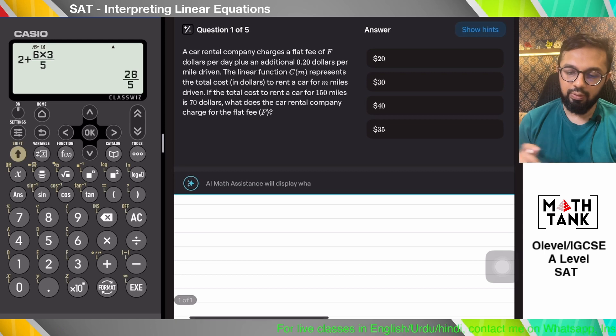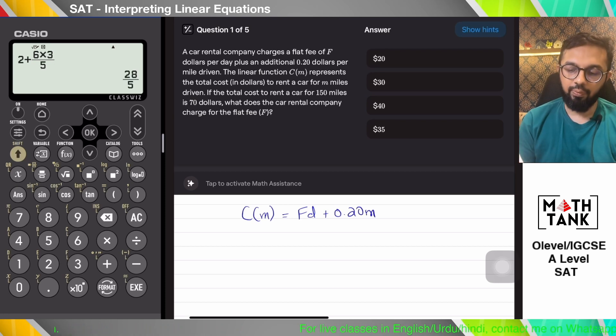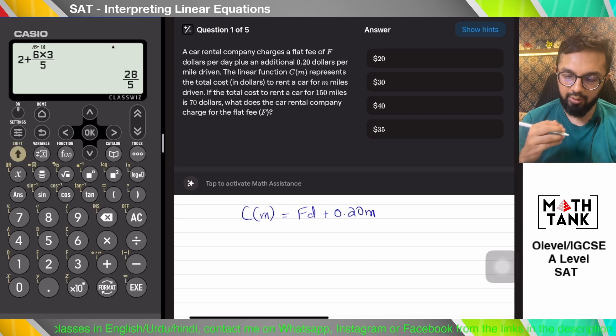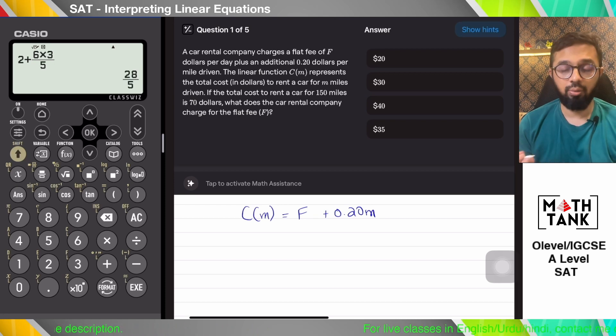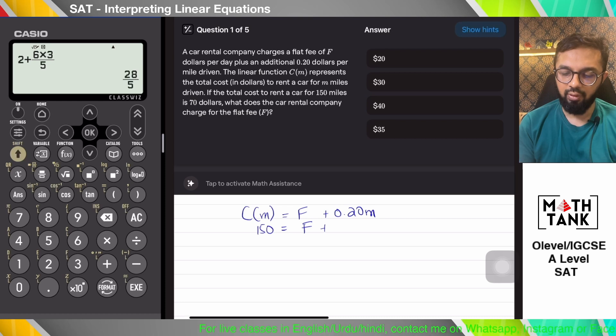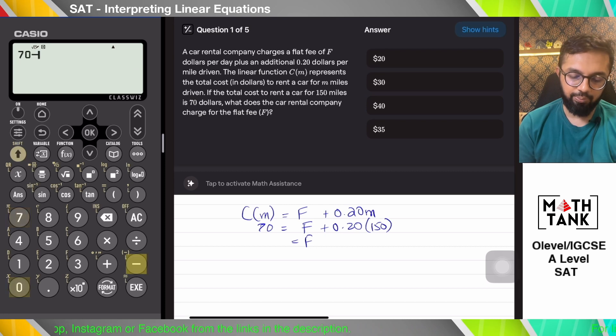The next set of hard questions says a car rental company charges a flat fee of f dollars per day plus an additional 0.20 per mile driven. The function C(m) represents the total cost. If the total cost to rent a car for 150 miles is $70, what does the car rental company charge for the flat fee? It's a flat fee, not per day. I'm assuming there's only one day involved. So 150 times 0.20... What's 70 minus 0.2 times 150? 40. It's 40 dollars per day. That's the flat fee.